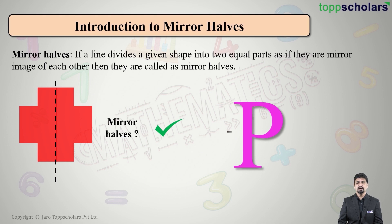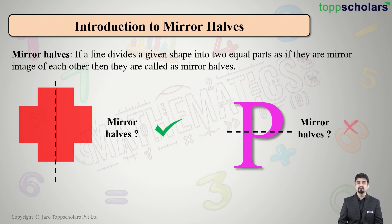Now let me draw a line on the letter P horizontally like this. In this case, can I say the top is the mirror half of the bottom, or the bottom is the mirror half of the top? Both are wrong. So the letter P cannot make two equal parts that are mirror halves of each other.